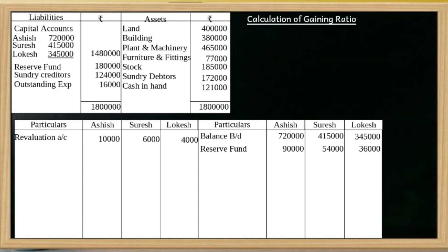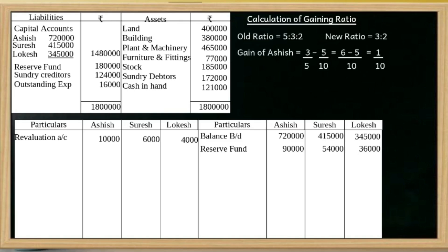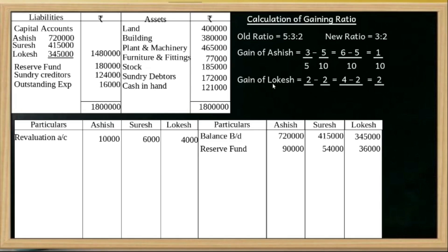Gaining Ratio calculation: Old ratio is 5:3:2, new ratio is 3:2. Gain of Ashish = new share minus old share = 3/5 minus 5/10 = 1/10. Gain of Logesh = new share minus old share = 2/5 minus 2/10 = 2/10. Therefore, the gaining ratio of Ashish to Logesh is 1:2.